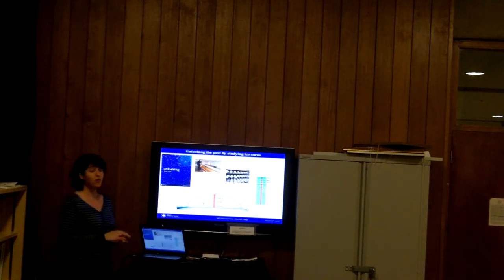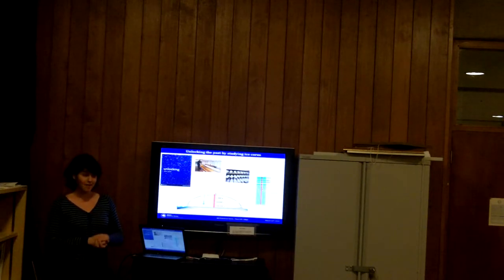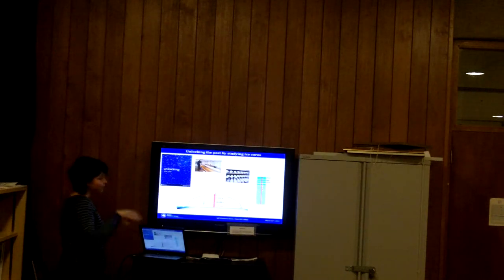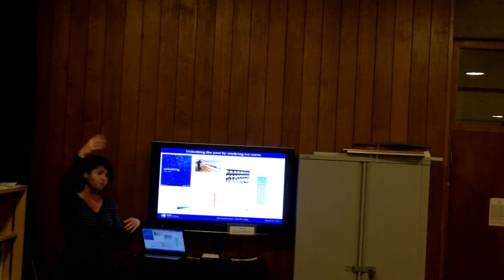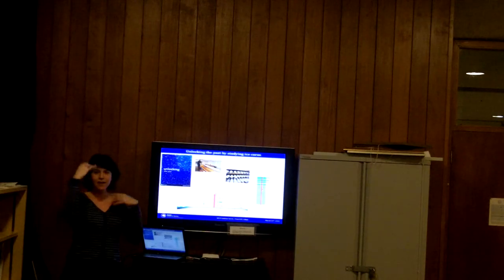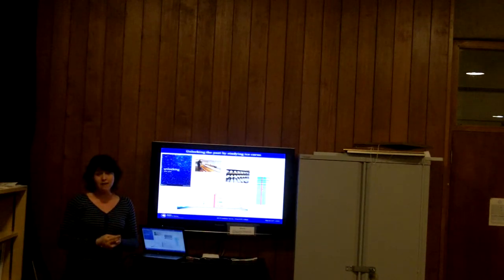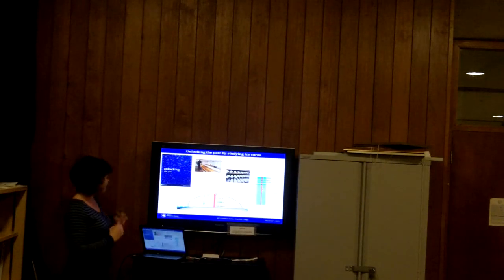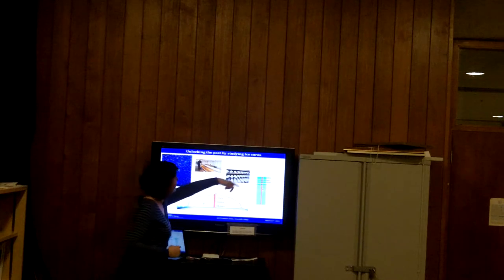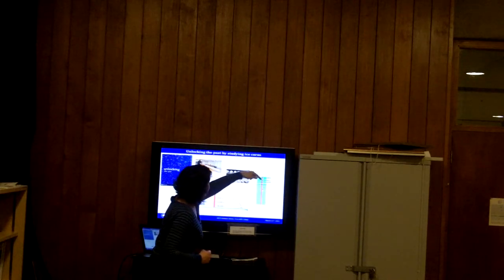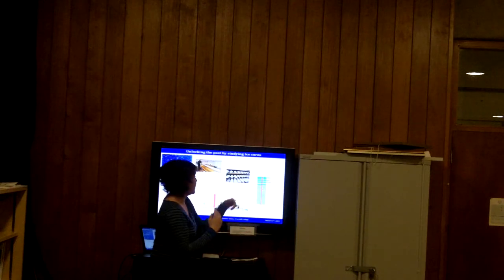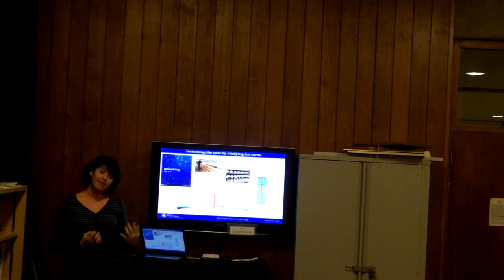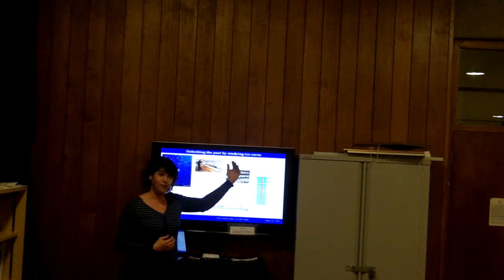How do ice cores actually give us information about past climate? This is a sketch of an ice sheet. You have the ice sheet and the snow that falls at the surface. It progressively accumulates — the snow gets compressed under its own weight and gets buried. Each layer of ice gets compressed and progressively the snow transforms into ice. Each layer of ice is going to record information about the environment and the climate at the time it was deposited at the surface.